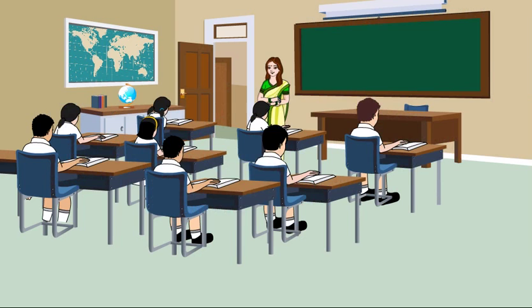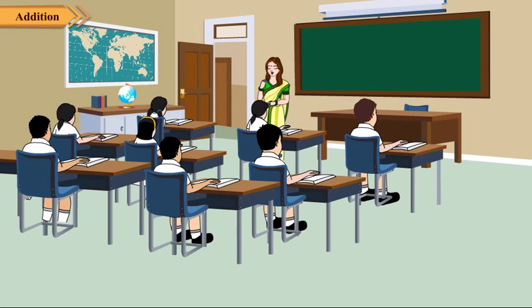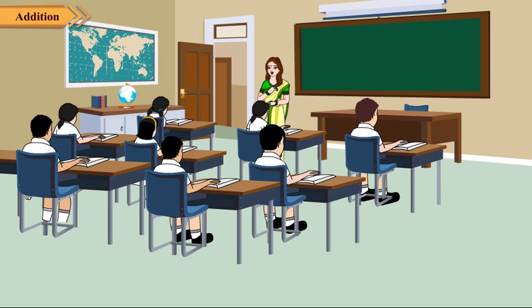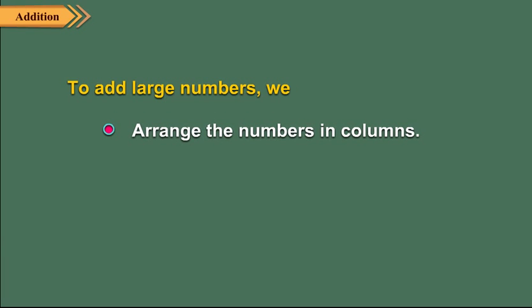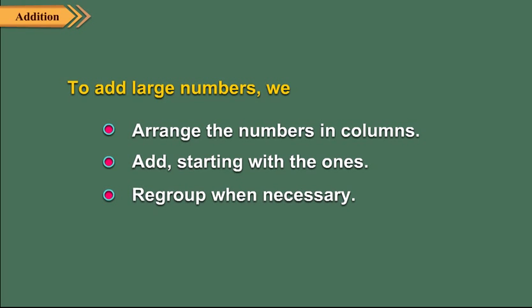Addition. In the previous class, we have learnt the addition of numbers up to 6 digits. Adding 7-digit and 8-digit numbers is the same as adding 6-digit numbers. To add large numbers, we arrange the numbers in columns, add starting with the ones, and regroup when necessary.